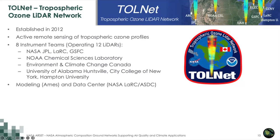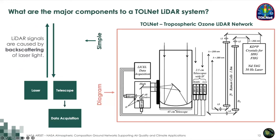I want to make sure everyone here has a good working understanding of the major lidar components. Lidar, or light detection and ranging, can be very complicated — we won't go into all the engineering details — but what I want you to leave with is a working understanding of the major components and how powerful lidar can be. Any lidar system consists primarily of a laser source, a telescope or receiver, and a data acquisition system.